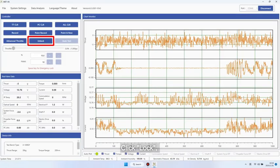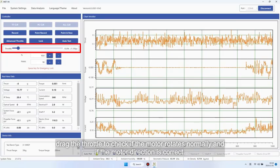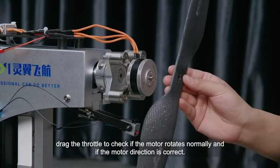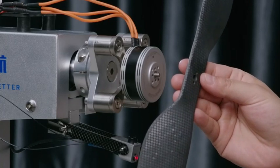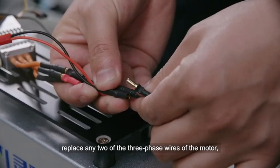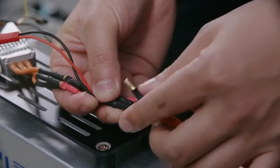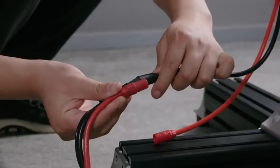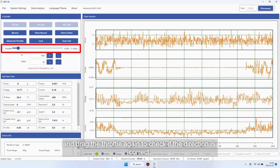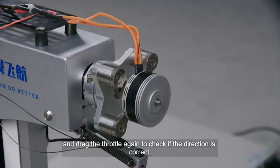Click lock, drag the throttle to check if the motor rotates normally and if the motor direction is correct. If the motor direction is incorrect, disconnect the power supply and replace any two of the three phase wires of the motor.